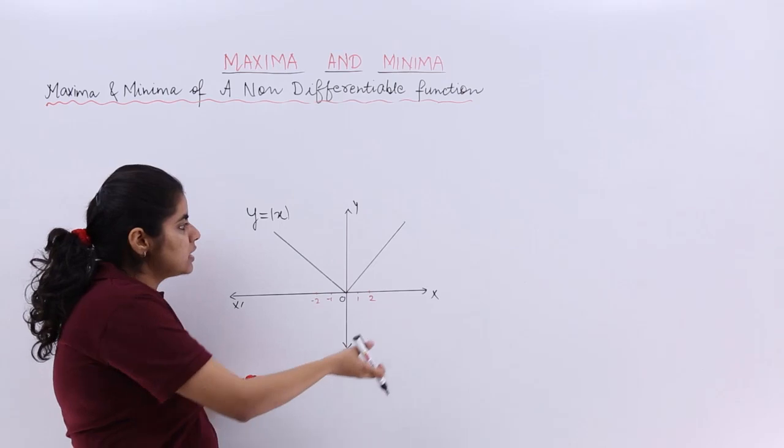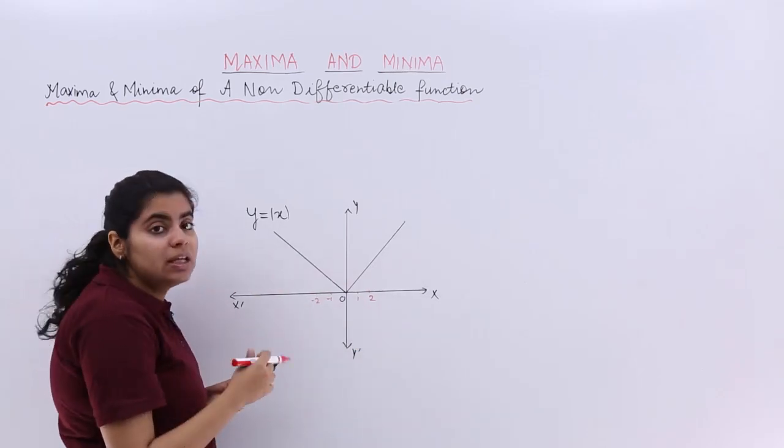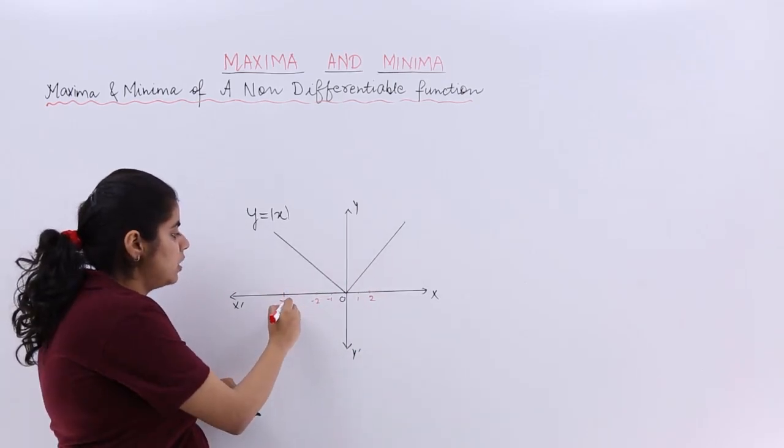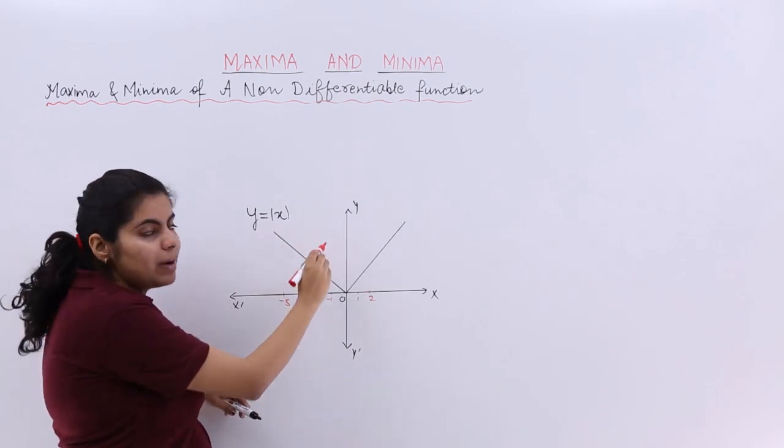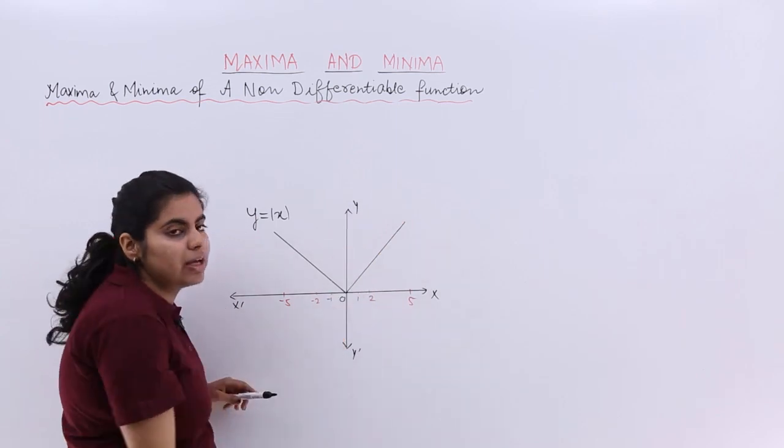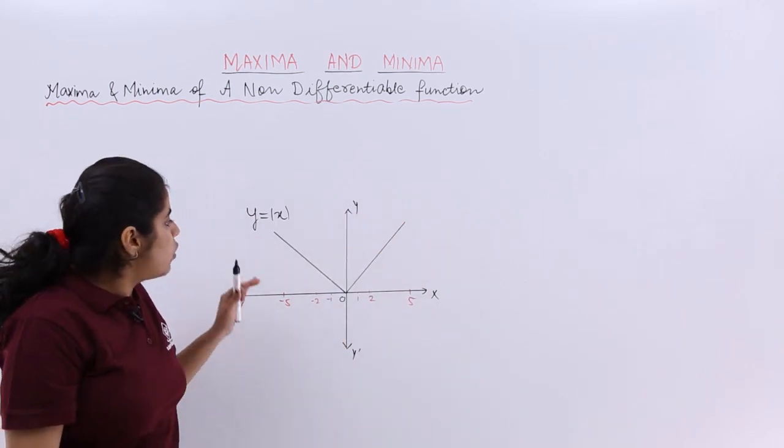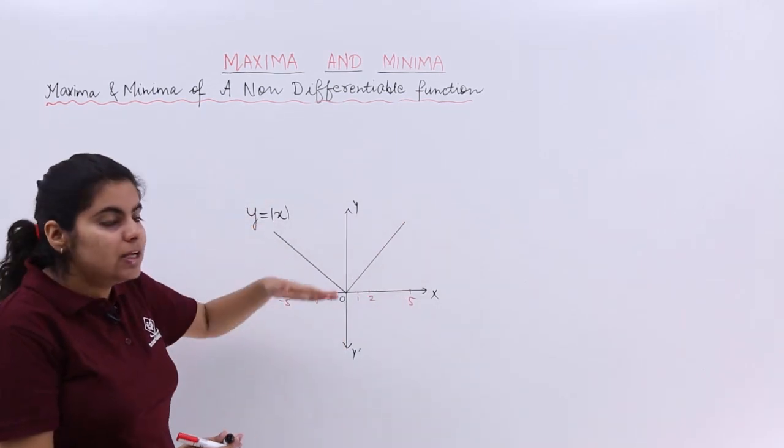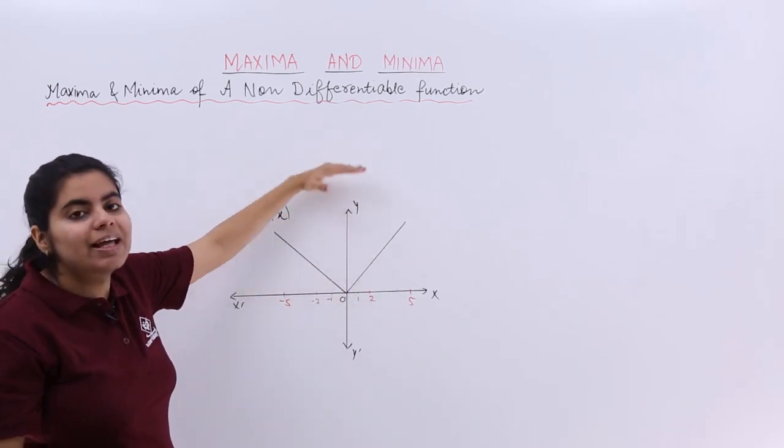Now you see that this function is such that it has many values into consideration. Suppose I have minus five here, so it will be five for minus five. Here also suppose I have five, so f of x would be five. F of five would be five.